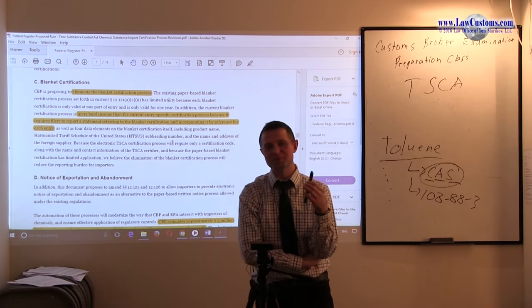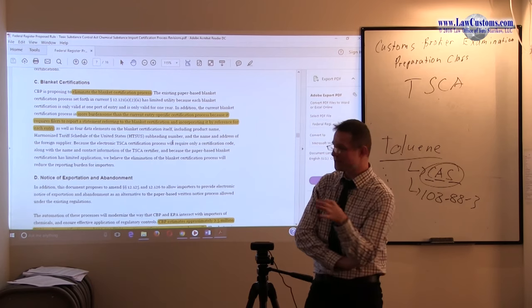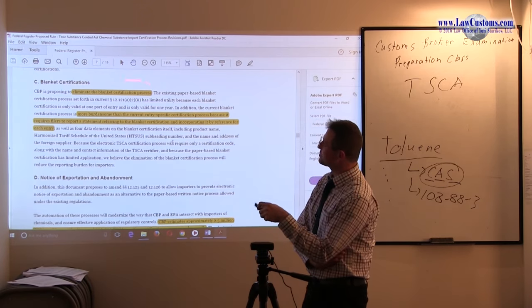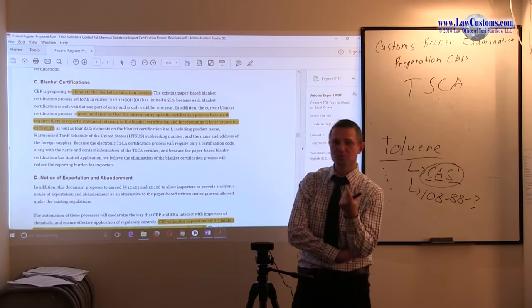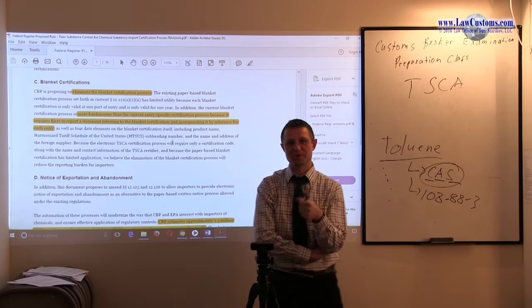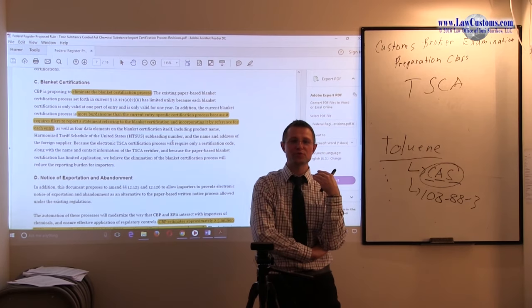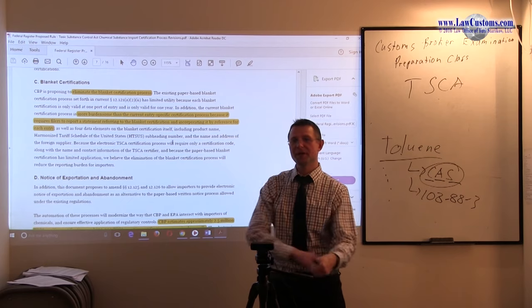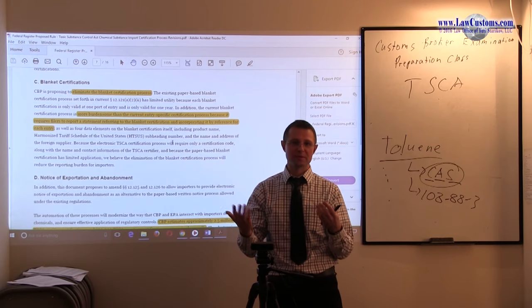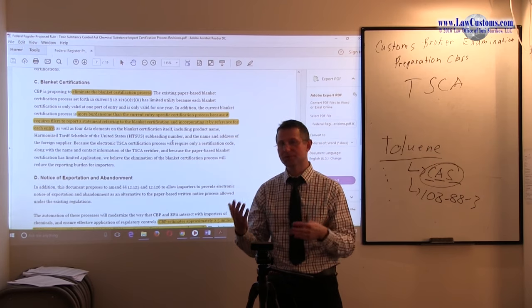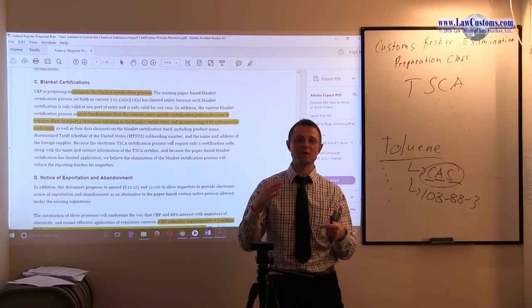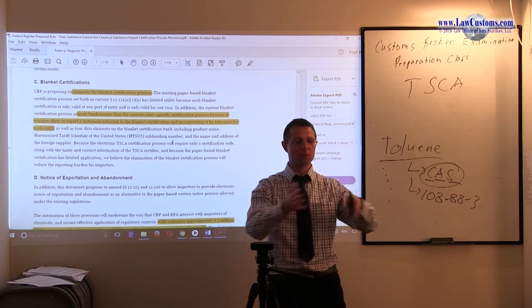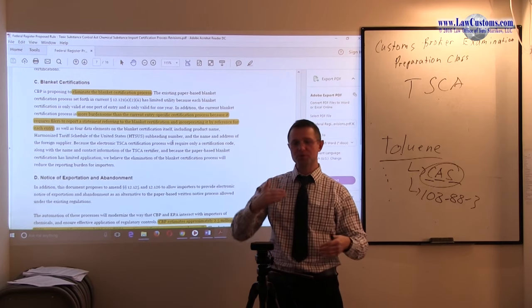Here's the part which is really significant and kind of the reason why I brought up this August 29th proposed rulemaking published in the Federal Register. Customs would like to... There are two types of certification basically. There is one which is per entry, so one entry, one certification, and then there is another which is blanket.